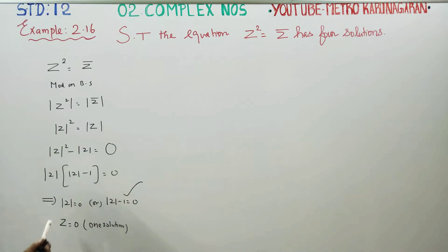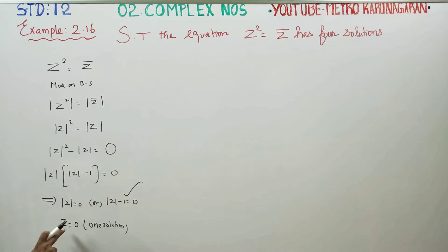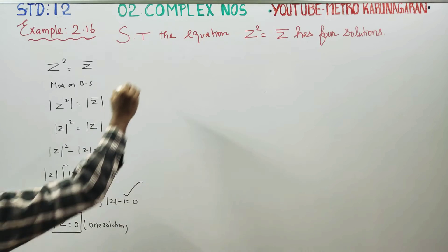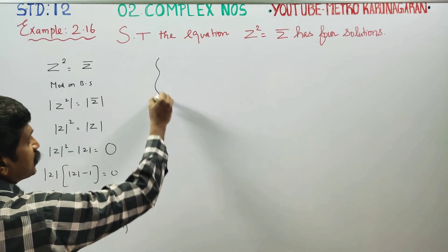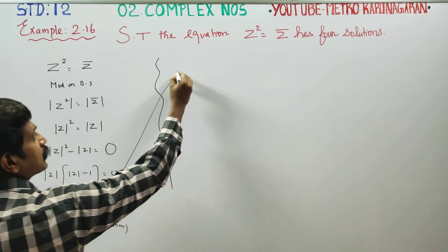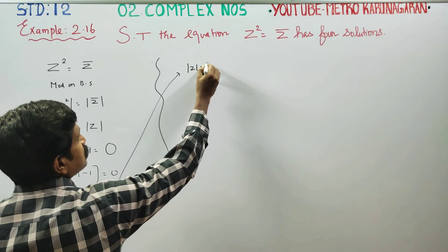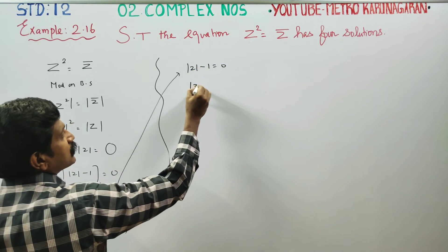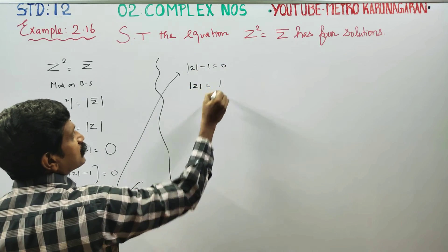Modulus of Z equal to 0 means Z is equal to 0, because the square root of X² plus Y² equal to 0 implies X equals 0 and Y equals 0. That is one solution. Now moving to the next part: modulus of Z minus 1 is equal to 0, so modulus of Z is equal to 1.